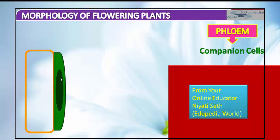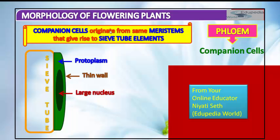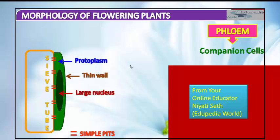Companion cells are derived from parenchyma cells, a type of ground tissue in plants. The large nucleus of the companion cell controls the sieve tube elements. The companion cell wall is very thin. Companion cells originate from the same meristem that gives rise to sieve tube elements. Simple pits allow the exchange of materials between companion cells and sieve tubes.